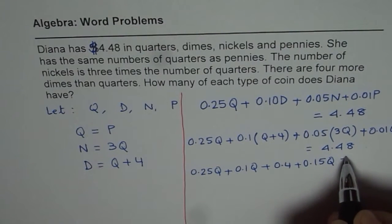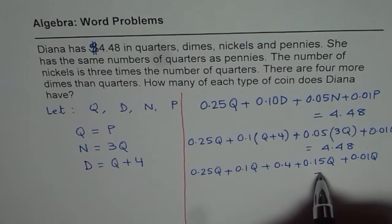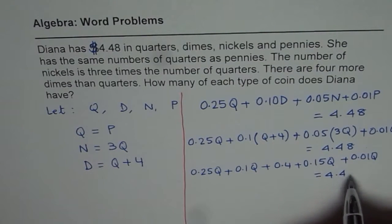We have a number here which is 0.1 times 4 which is 0.4 plus 0.05 times 3 gives us 0.15 quarter plus 0.01 quarter. And all this is equals to 4.48.